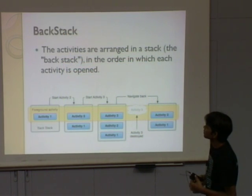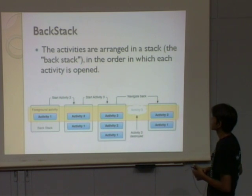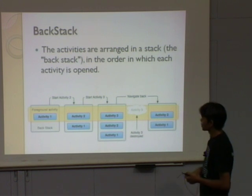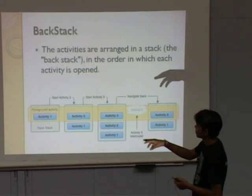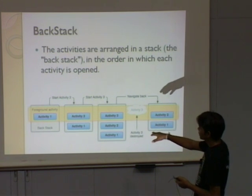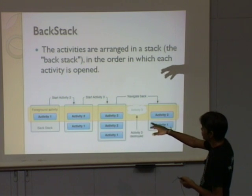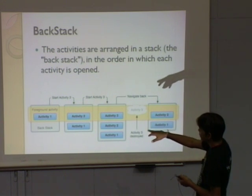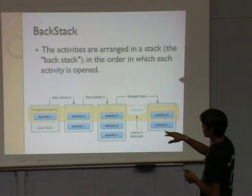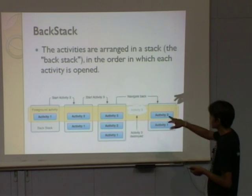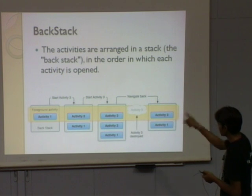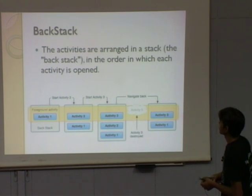This is the back stack. Activities are arranged in a stack in the order in which each activity is opened. Initially activity 1 is in the foreground. Activity 1 calls activity 2 — activity 1 goes to the background and activity 2 is on top with focus. Activity 2 calls activity 3 — activity 2 goes to background and activity 3 has focus. When activity 3 is destroyed, focus returns to activity 2 — this is the navigation back stack.